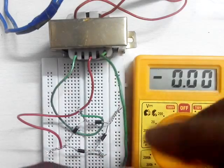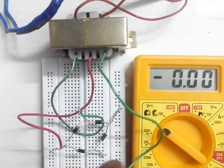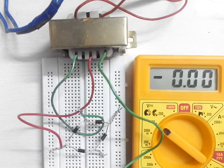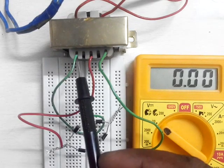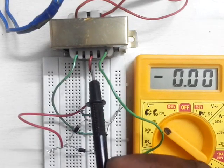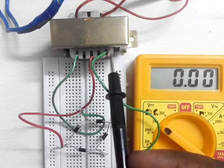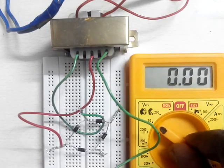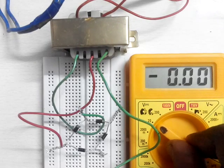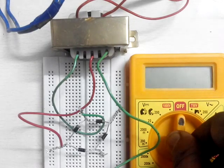It is rated 12 volt, 12-0-12. It means 12 volt AC from here, zero from here, again 12 volt AC from here. So let us practically check how much output it actually gives. For that we are taking the multimeter to the AC volt side.